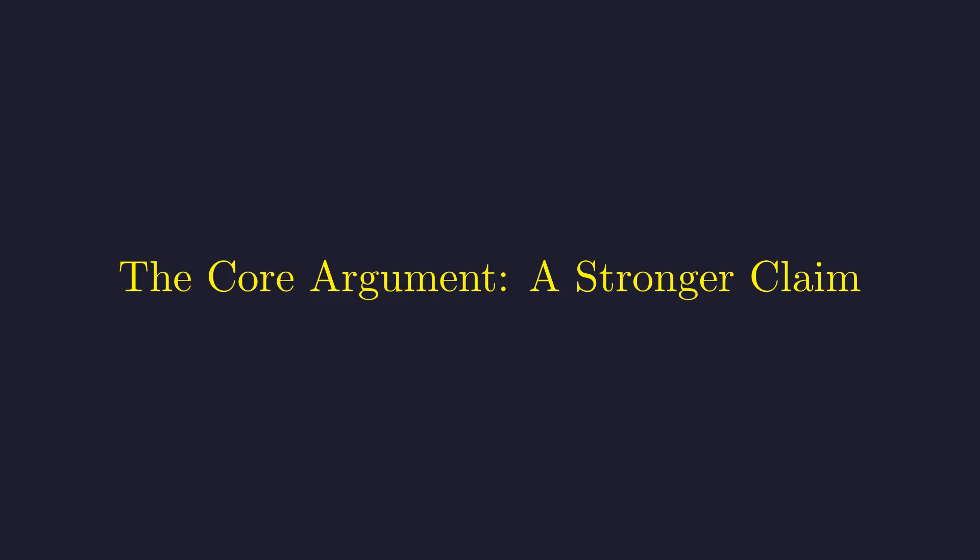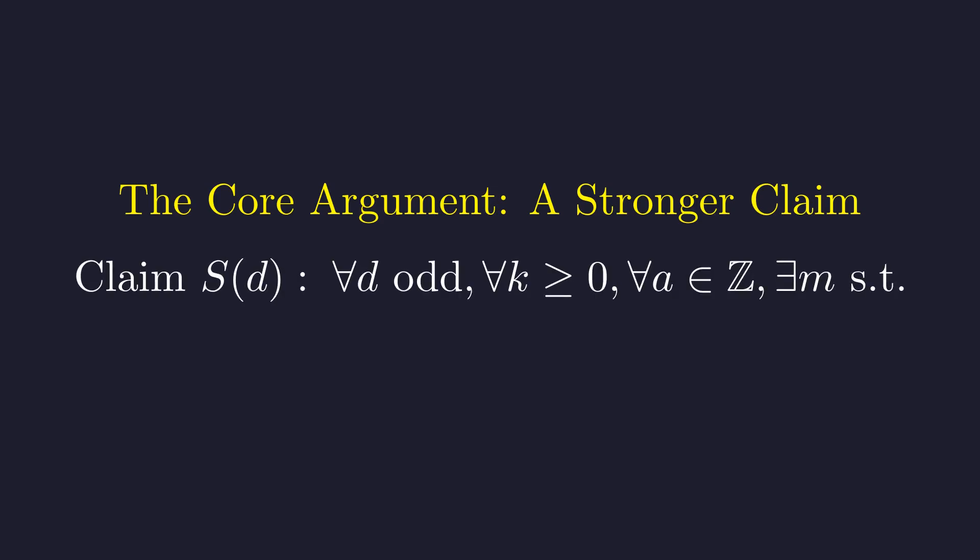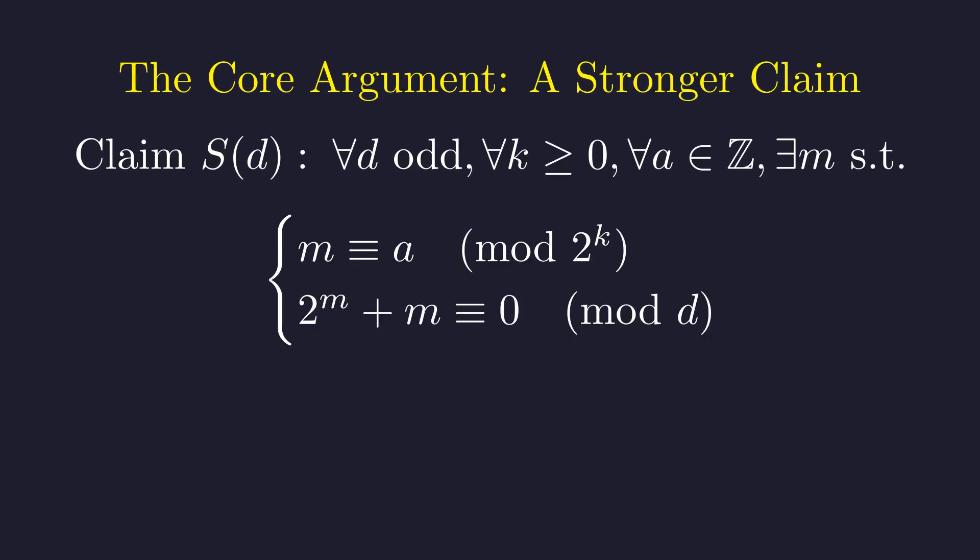This difficulty shows we need a more robust method. Instead of constraining m from the start, we will prove we have more flexibility by strengthening the claim. Here is our claim, S of d. The key is the introduction of a new free parameter, a. We claim we can find an m that is congruent to any a we choose modulo 2 to the k, while simultaneously solving the congruence modulo d. We prove this by strong induction on d.